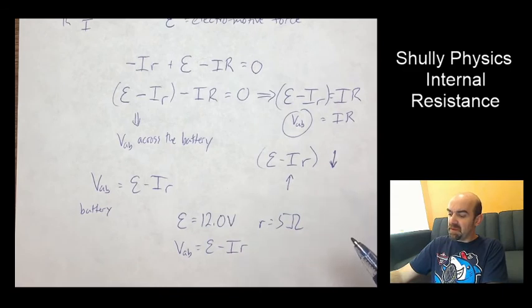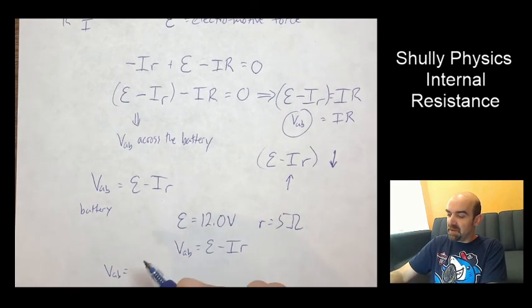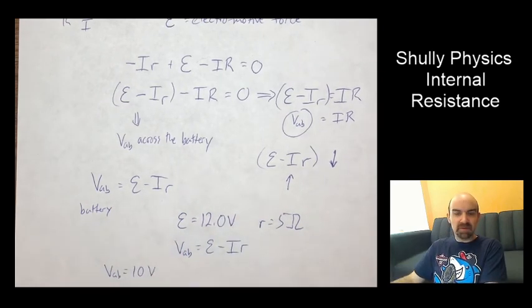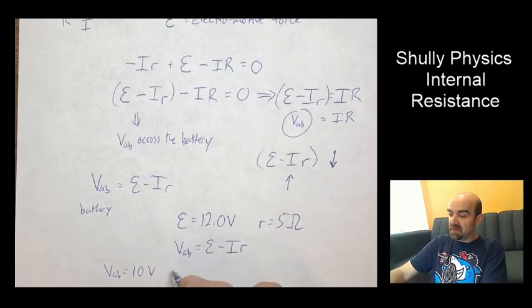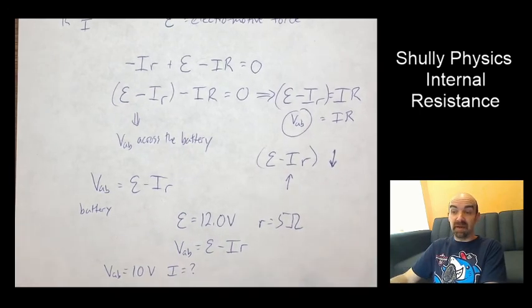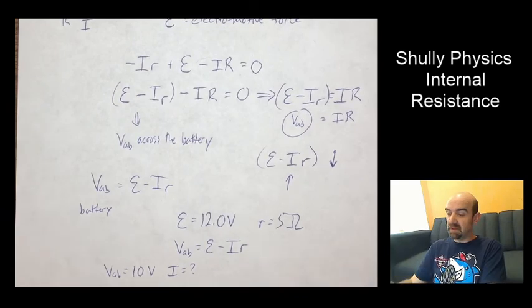So what will be the, if let's say at one point we read a VAB of 10 volts, then what is the current flowing through the battery at that point? What's the current due to that load?